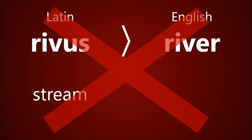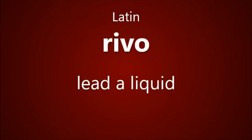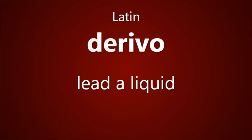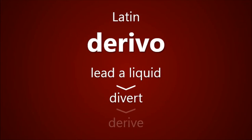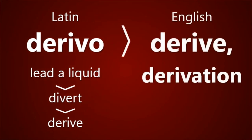I'll finish this video with one interesting link that can be made, though. Rivus in Latin is related to the verb rivo, which means to lead a liquid or body of water. This verb was more common with the added prefix de, making it derivo, which took on broader meanings such as divert, and ultimately derive – giving English words which are so often used when discussing etymologies: derive and derivation.